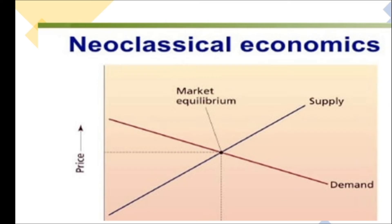Neoclassicals believe in constructing measurable hypotheses about economic events, then using empirical evidence to see which hypotheses work best. In this way, they follow in the logical positivism or logical empiricism branch of philosophy. Microeconomics applies a range of research methods, depending on the question being studied and the behaviors involved.